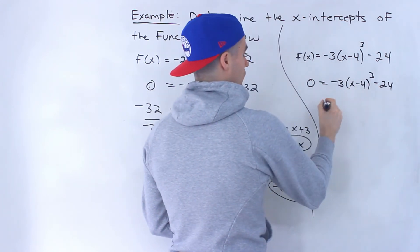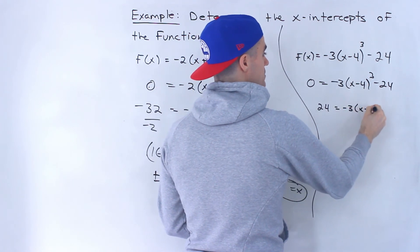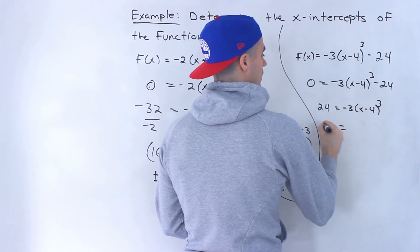Bring the negative 24 over, that will be positive 24. Divide both sides by 3, negative 8.